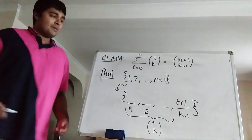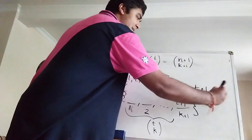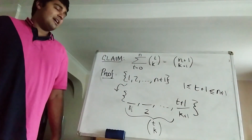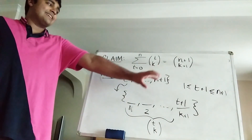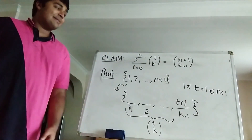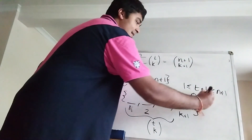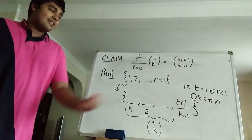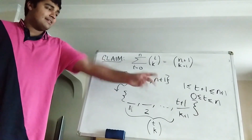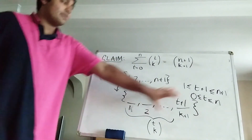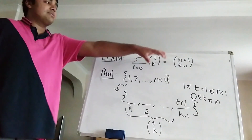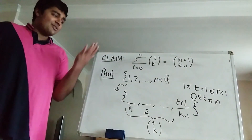Now, t plus 1 must be between 1 and n plus 1, which means t ranges from 0 to n. So the total number of subsets of size k plus 1 is the sum from t equals 0 to n of t choose k, and that equals n plus 1 choose k plus 1. That completes the combinatorial proof of this identity.